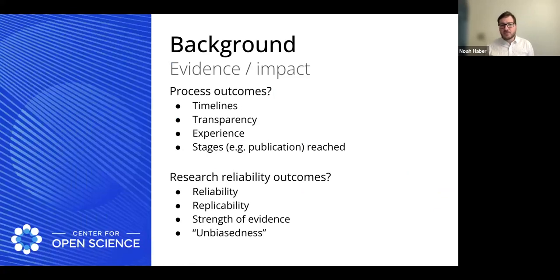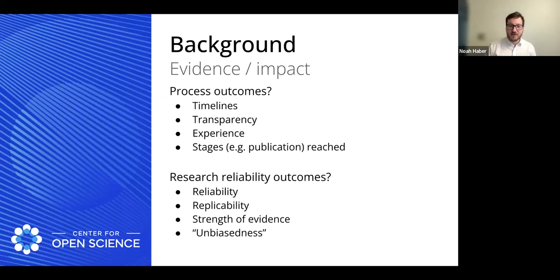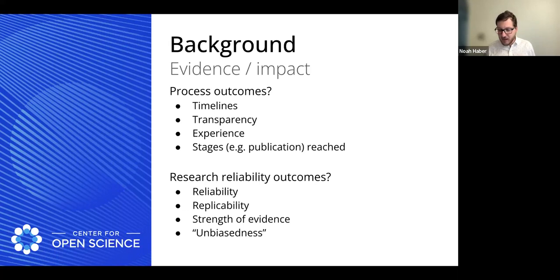We're looking at different kinds of outcomes: process outcomes like what parts of pre-registration and registered reports impact timelines and transparency, and how far you get through the research process before you drop or switch pathways. That has to happen even before you get to research reliability outcomes — replicability, strength of evidence, unbiasedness. And one of the big problems is that when we look at data out there, we only really have data from the point of publication, which means all of the selection that happens beforehand is hidden. We really want to start from the idea phase, and that's really tough. We have a way of addressing all of these things in a pretty unique way, and to talk about that I'm going to turn it over to Macy.